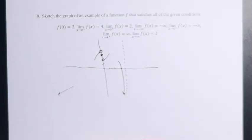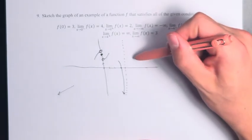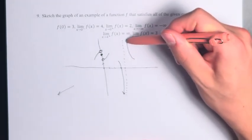And as we're getting closer and closer to 4 from values greater than 4, the value of the function is getting larger and larger.